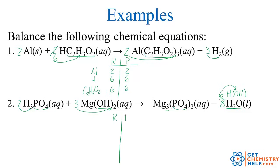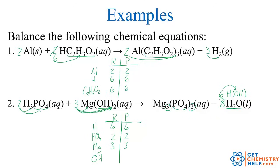So let's go through and just double check it. I have to balance hydrogens, phosphates, magnesiums, and hydroxides. On the reactants, I've got two times three — six hydrogens — and six hydrogens on the products. I've got two phosphates on the reactant side, two phosphates on the product side. I've got three magnesiums on the reactants, three magnesiums on the products. I've got three times two hydroxides on the reactant side — that's six — and six hydroxides on the product side. So that reaction is indeed balanced.